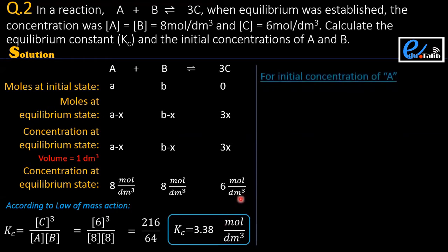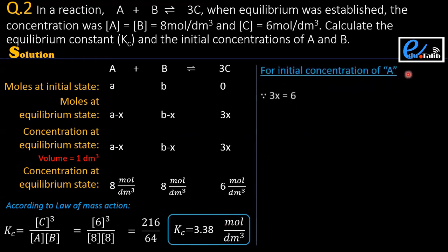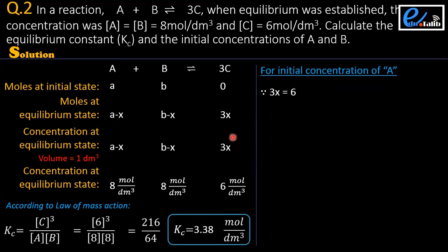Next we find the initial concentration of A. We know that 3x is the concentration of C at equilibrium, and 6 moles per dm³ is the concentration of C at equilibrium — these are the same. So we write 3x equals 6, and solving gives x equals 2.